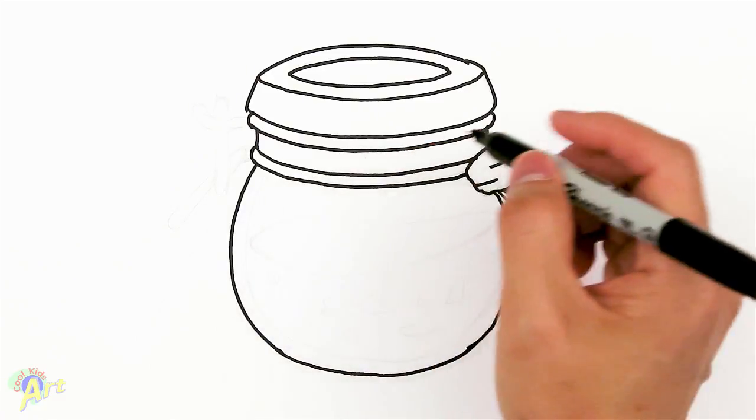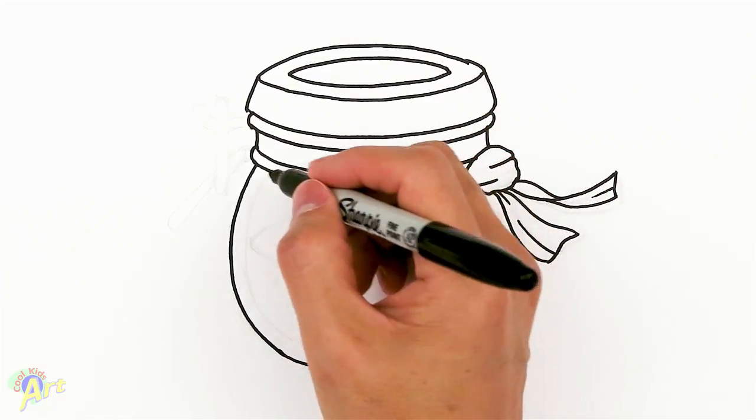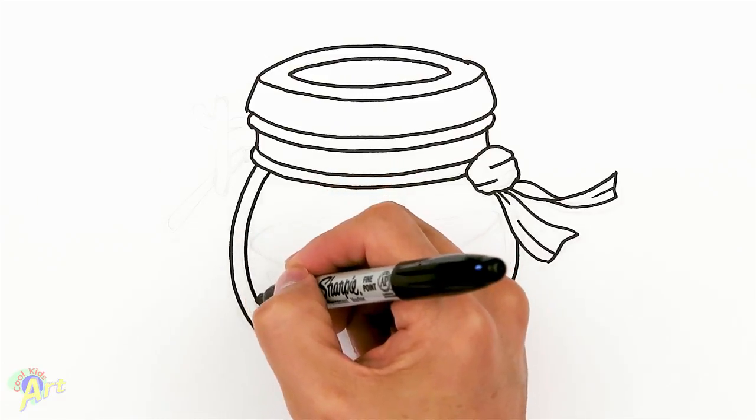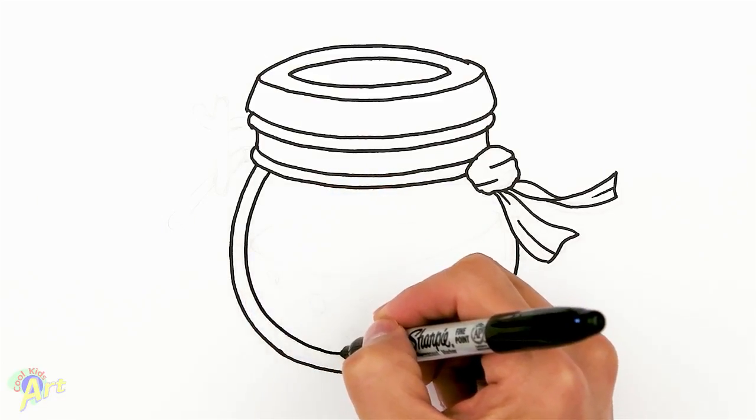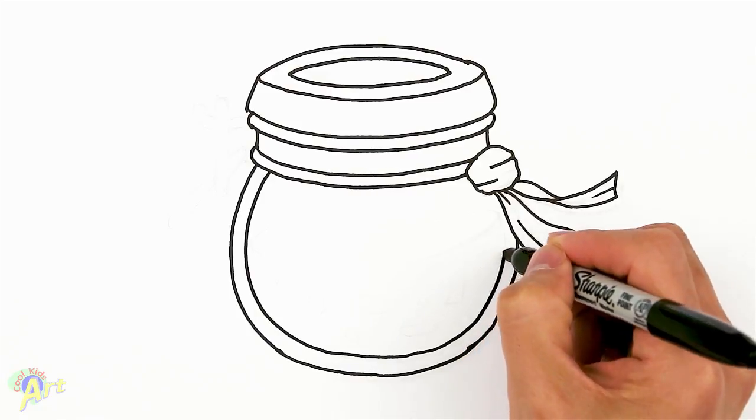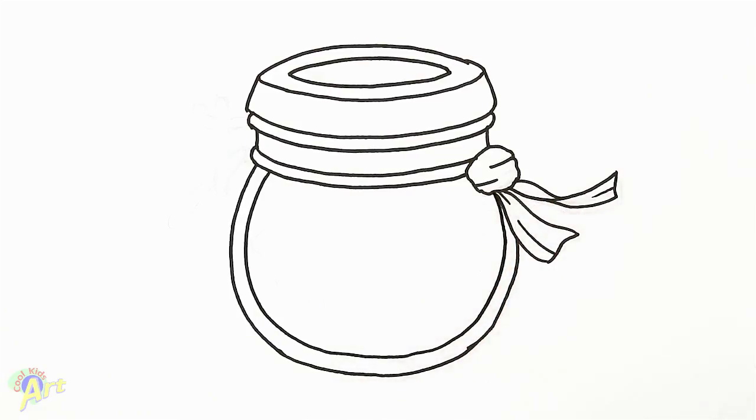Because we just have to draw the inside, because there's a thickness to the glass, so we're just going to draw the same curve, so we're just following that one, all right.